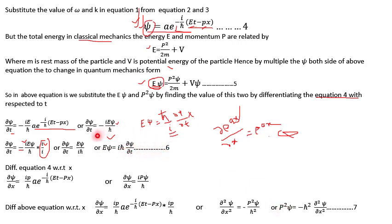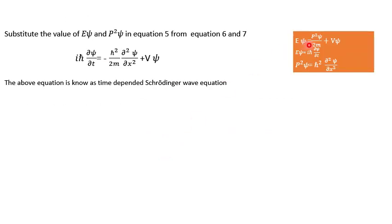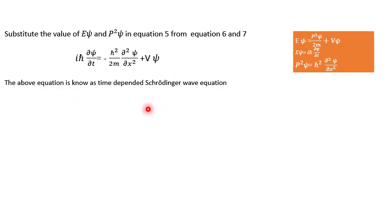Now we have the value of E·ψ from equation 6 and P²·ψ from equation 7. Substituting both into equation 5 (E = P²/2m + V), we replace E·ψ with iħ·∂ψ/∂t and P²·ψ with −ħ²·∂²ψ/∂x². This gives us: iħ·∂ψ/∂t = −(ħ²/2m)·(∂²ψ/∂x²) + V·ψ. This equation is the time dependent Schrödinger wave equation. In the next video, I will share the solution of the time independent wave equation. Thank you very much.